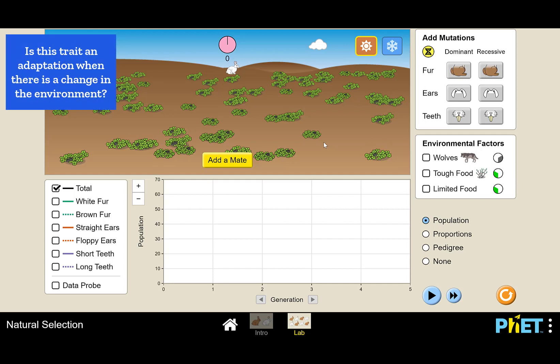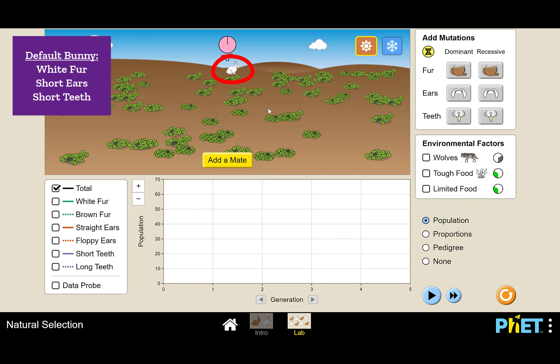The purpose of this simulation is to determine if different traits of our bunnies are adaptations if there is a change in the environment. The bunnies always begin with white fur, short ears, and short teeth.